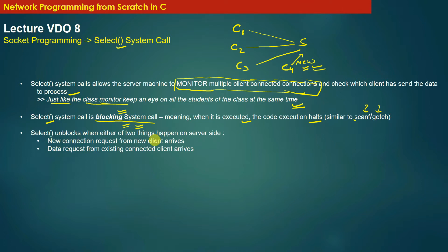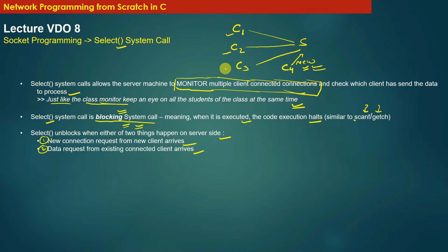Select system call unblocks when either of two things happen on the server side. Scenario one: the server receives a new connection request from a new client — when client C4 sends a new connection initiation request, server S unblocks. Scenario two: a data request from an existing connected client arrives, such as from C1, C2, or C3. The server unblocks when either event one or event two occurs.